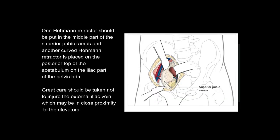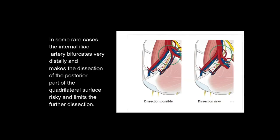One Hohmann retractor should be placed in the middle part of the superior pubic ramus, and another curved Hohmann retractor is placed on the posterior top of the acetabulum on the iliac part of the pelvic brim. Great care should be taken not to injure the external iliac vein, which may be in close proximity to the elevators. In some rare cases, the internal iliac artery bifurcates very distally, making dissection of the posterior part of the quadrilateral surface risky and limiting further dissection.